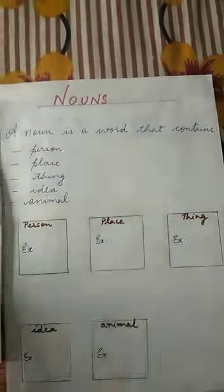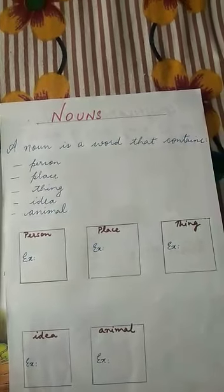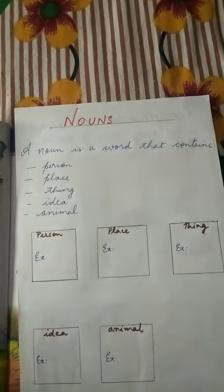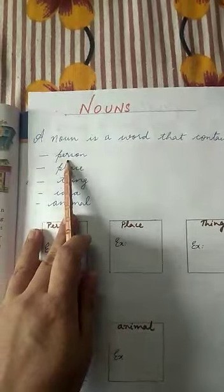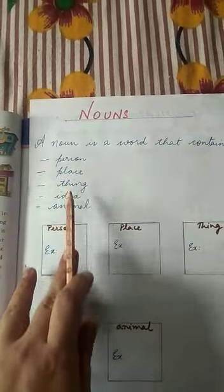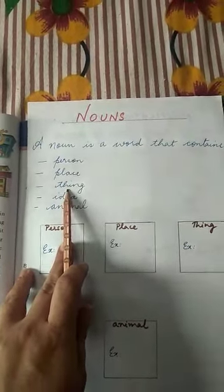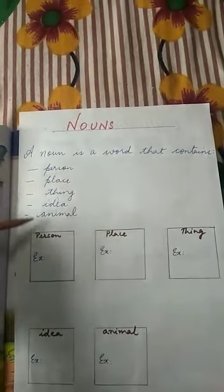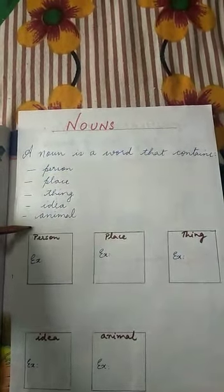What are nouns? A noun is a word that names a person, place, thing, idea, or animal. That means any person, any place, any name of a thing, or any idea or animal — these are all called nouns.